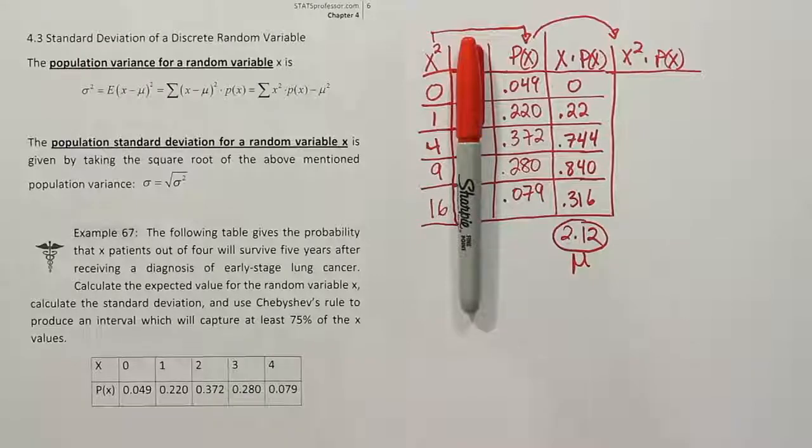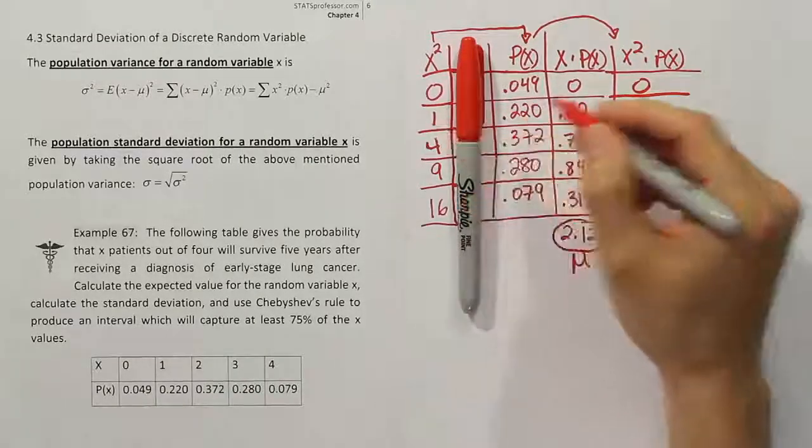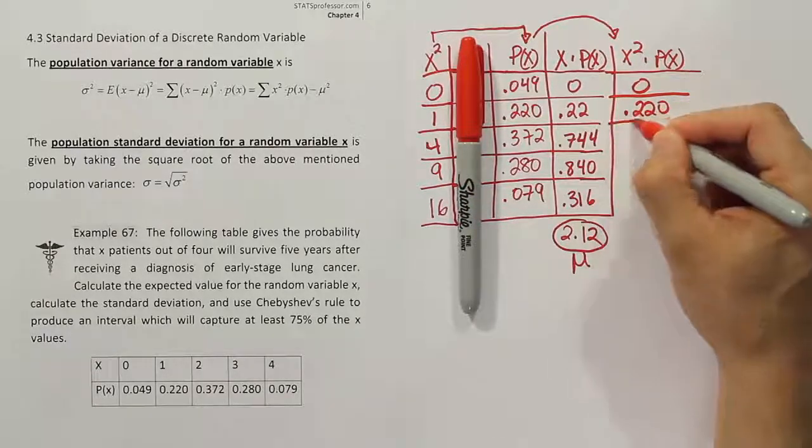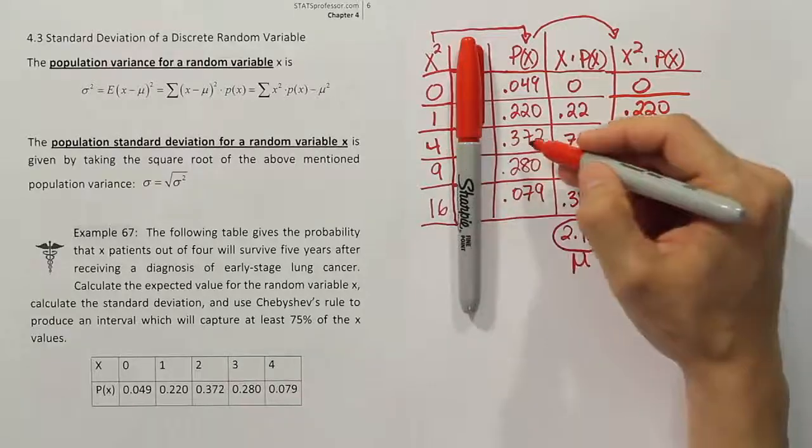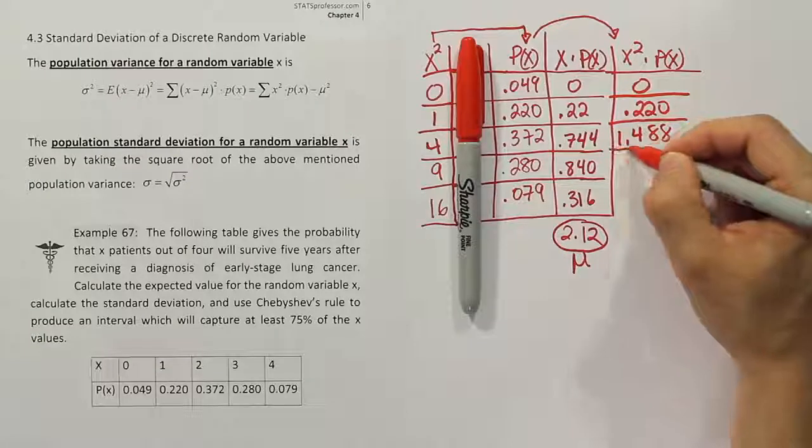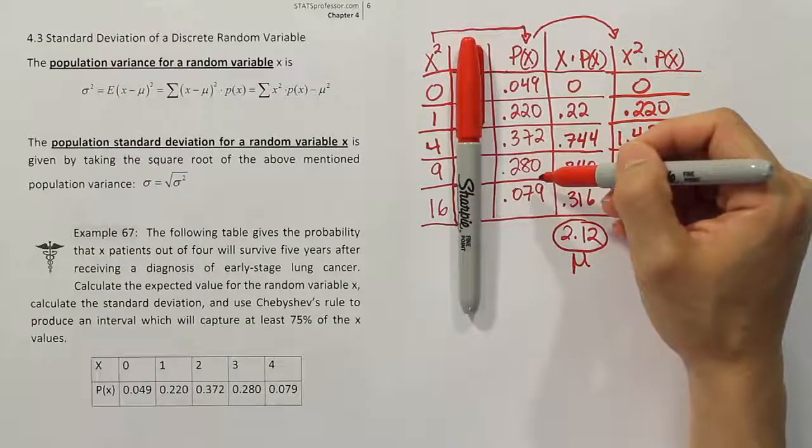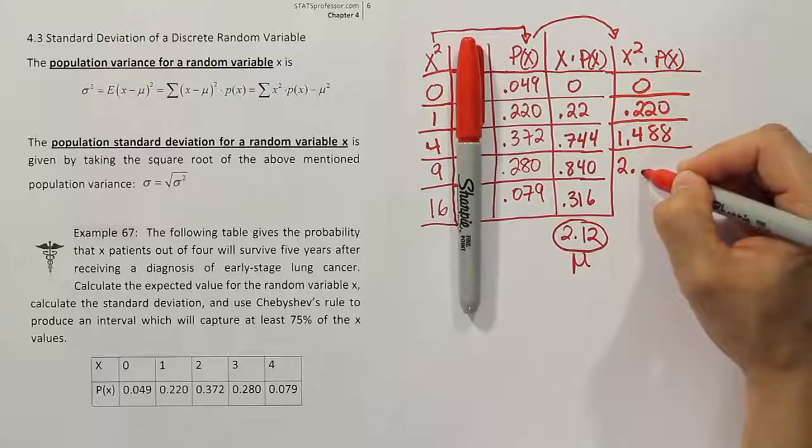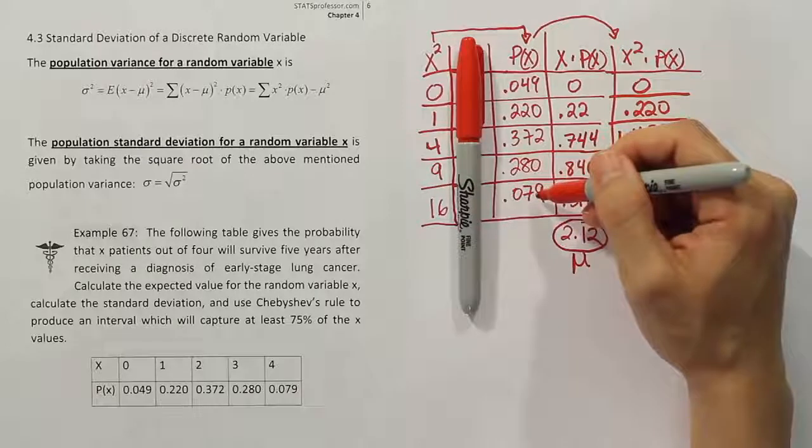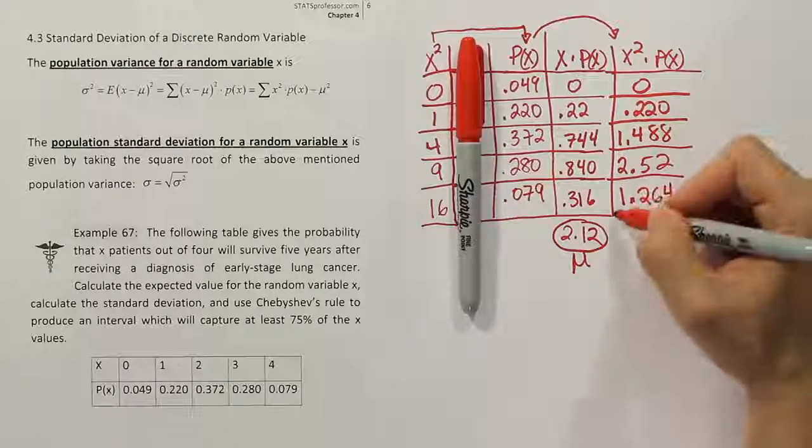Okay, so if you do that, of course, 0 times this number is just going to give you 0. And 1 times that number is going to give you 0.220. Okay, and then we continue. 4 times 0.372 actually gives you 1.488. And then if we do 9 times 0.280, we get 2.52. And then if you do 16 times 0.079, you get 1.264.